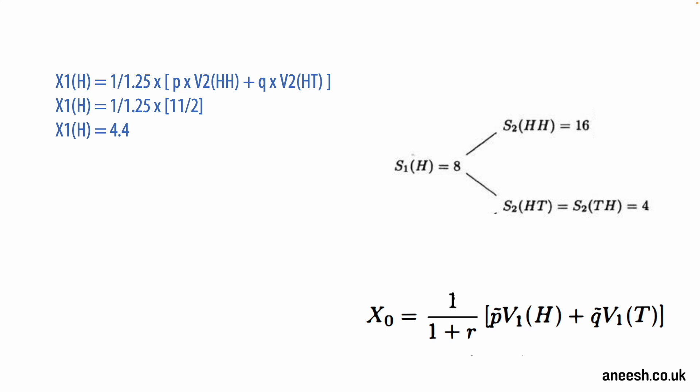Therefore, if we were to sell a European option with one time period where the stock price starts at 8 and can go up to 16 or down to 4, our risk-neutral price would be 4.4 and we would need to hold 11 over 12 delta to hedge our exposure.